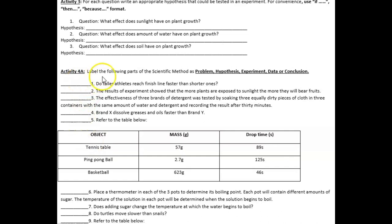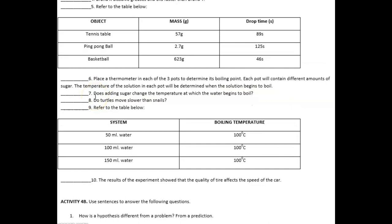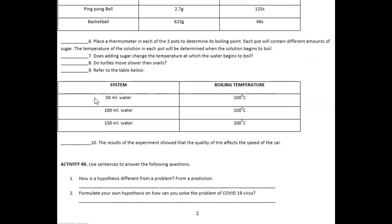Label the following parts of the scientific method as problem, hypothesis, experiment, data, or conclusion. So you have here ten items. After that, for the last activity, Activity 4B, use sentences to answer the following questions one and two. So you have two problems to be answered. Good luck.